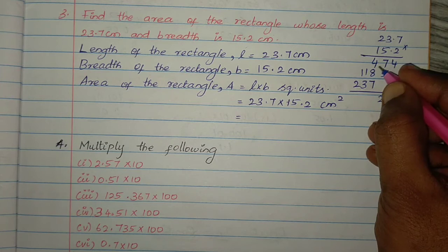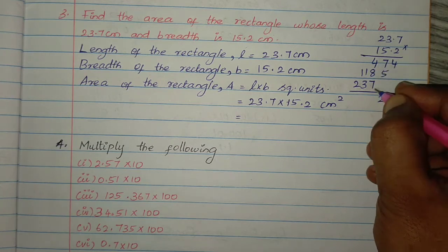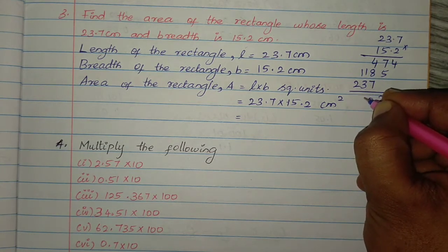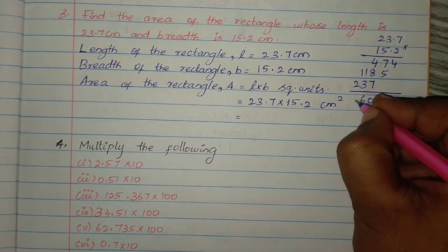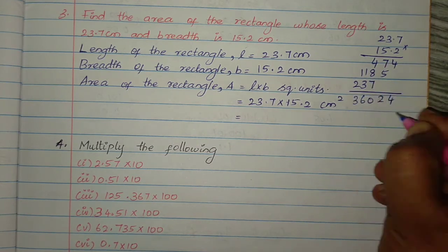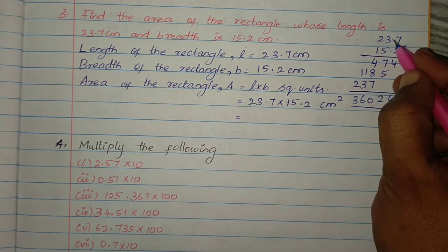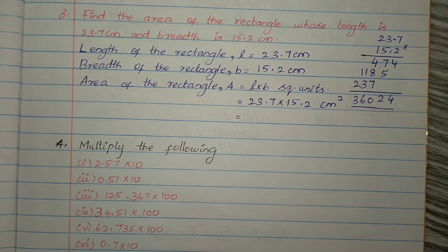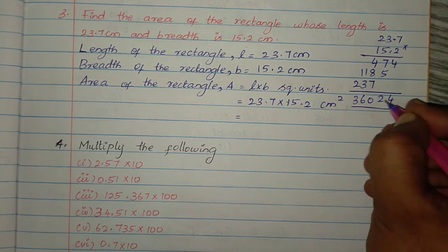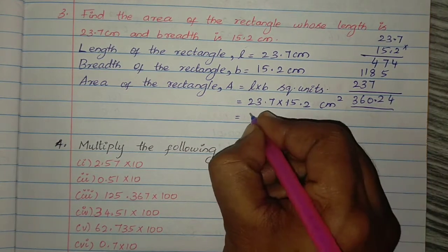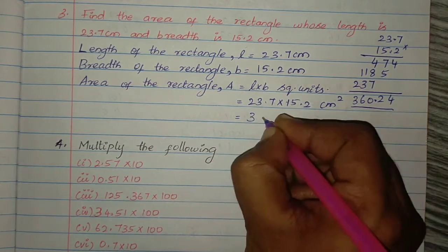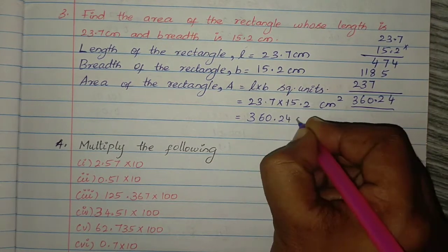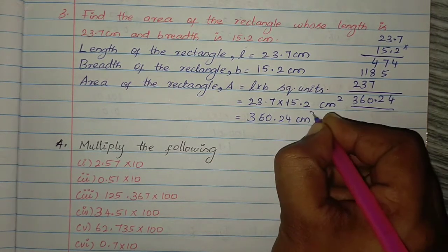1 carry over: 12, 19, 20. So result: 2, 4, 6, 3. Decimal point: one digit after decimal here, one digit after decimal there — so place decimal 2 digits before. Answer is 360.24 cm square.